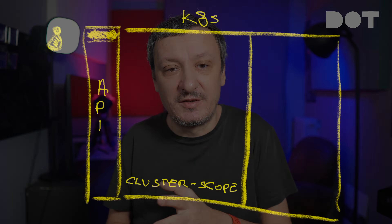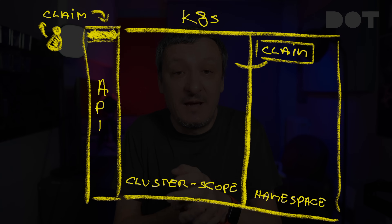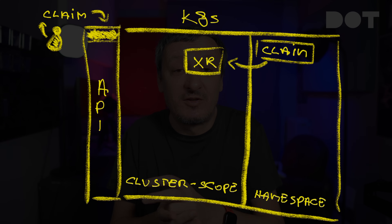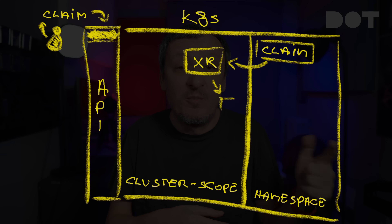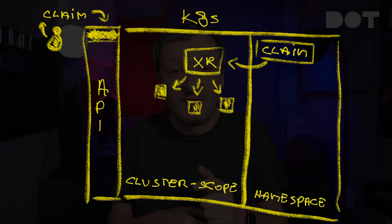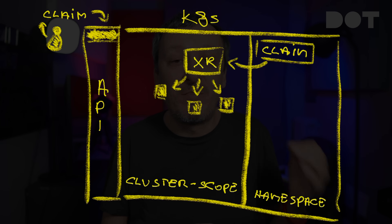A while ago, a workaround was made in the form of claims. Claims are namespace-scoped and their primary purpose is to claim composite resources. When we create a claim inside a namespace, that claim creates and manages a cluster-scoped composite resource, which in turn composes cluster-scoped managed resources. That was not ideal since it solved only part of the problem. People wanted everything — and I repeat, everything — to be namespace-scoped, and now they got it with the release of Crossplane V2.